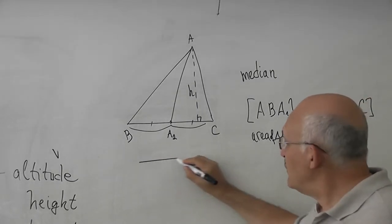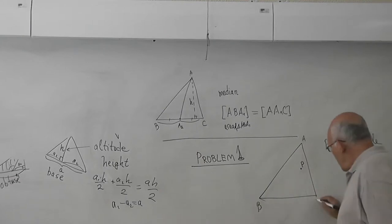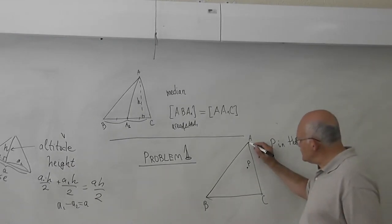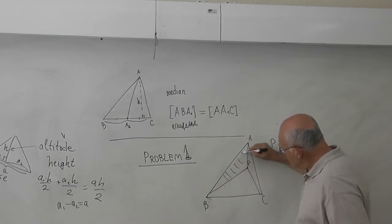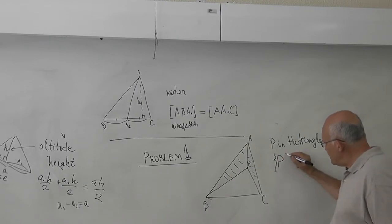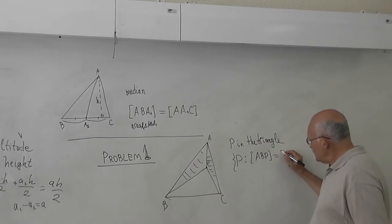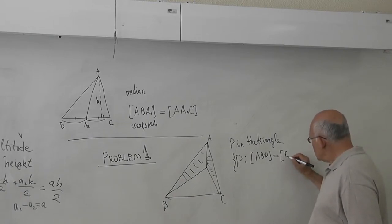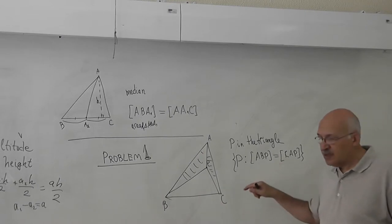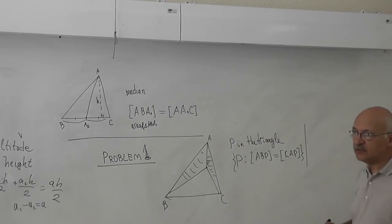Now this will be problem number one. We have a triangle. We take a point P inside the triangle. I want to find all the points P such that area ABP equals area CAP. Is the question clear? Now I want to give you a definition, a new word.